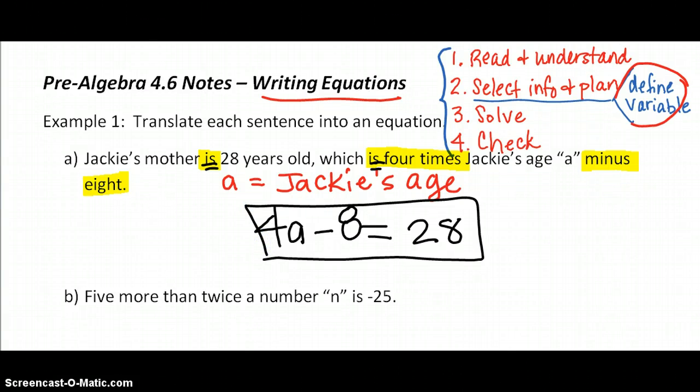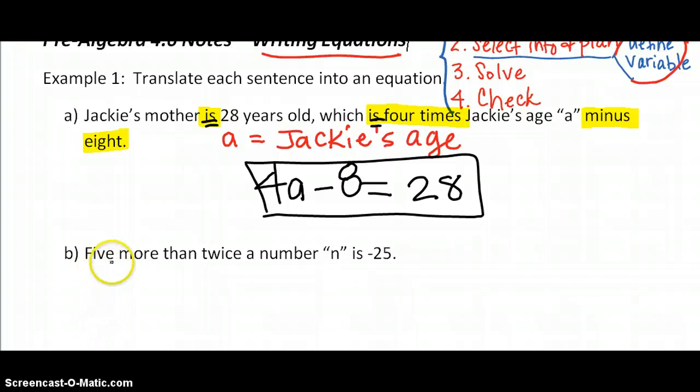Let's practice one more. Five more than twice a number n is negative 25. Okay, they're telling me what they want the variable to be. So n stands for a number.